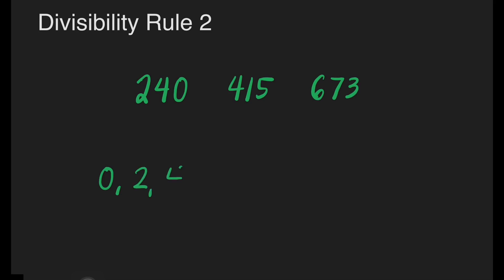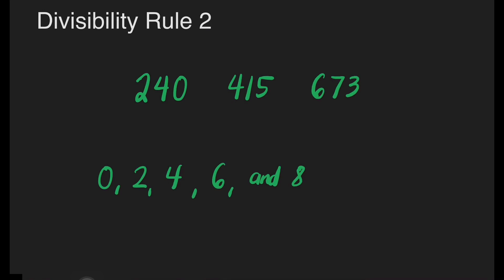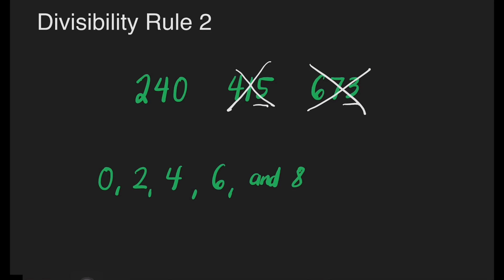What are even numbers? These are 0, 2, 4, 6, and 8. If a number ends with 0, 2, 4, 6, or 8, it means it is also divisible by 2. So we can say that 415 is not divisible by 2 because it ends with 5. As well as 673 is not divisible by 2 because it ends with 3. And we can say that 240 is divisible by 2 because it ends with 0.